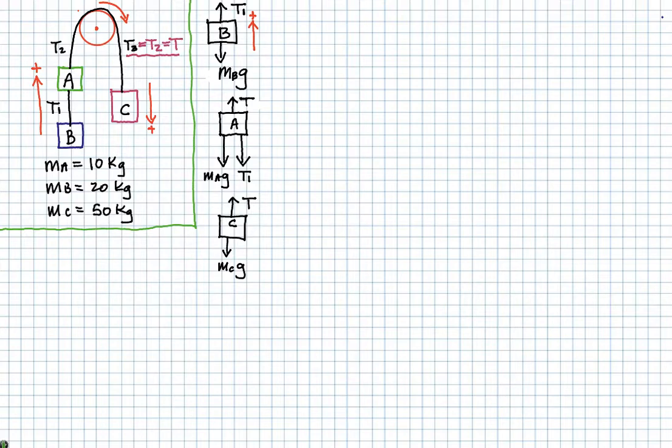Now object A has three forces acting on it. It has its weight pulling down. That would be MAG. And it has T1 pulling it down also. Now I want to emphasize here that T1 is a contact force. And it is the contact force that's pulling down on A.